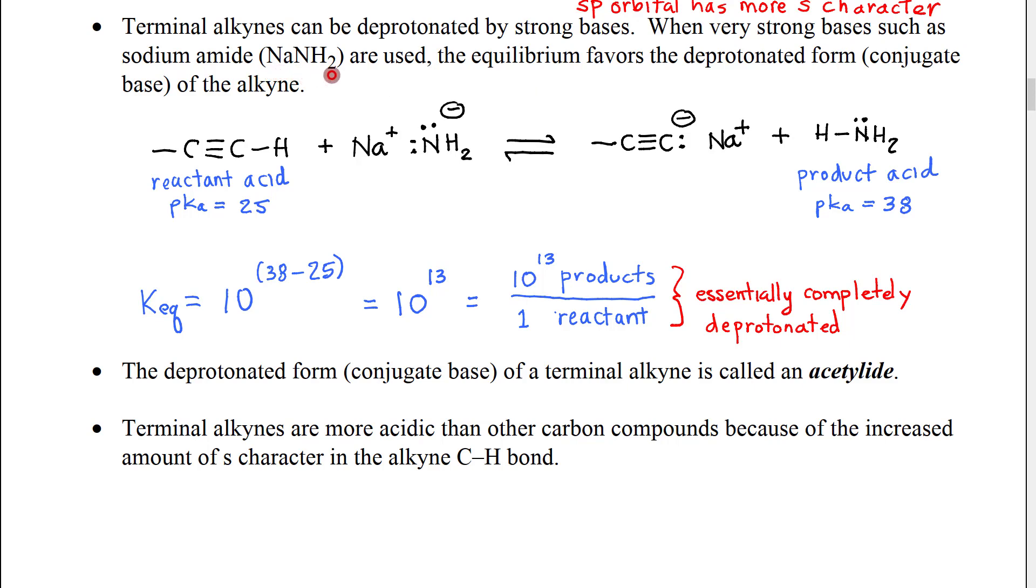sodium NH2, which is called sodium amide. When these bases are used, the equilibrium will actually favor the deprotonated form of the alkyne. Here's an example.